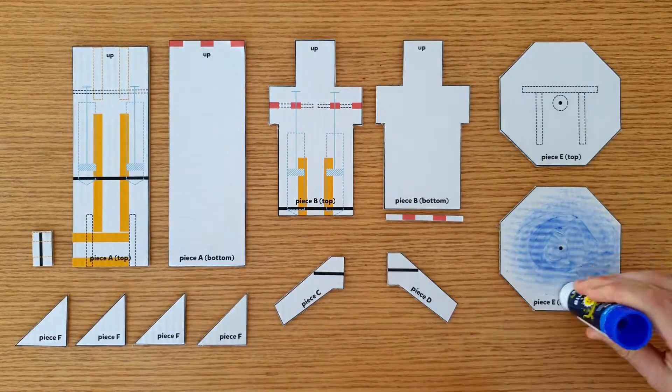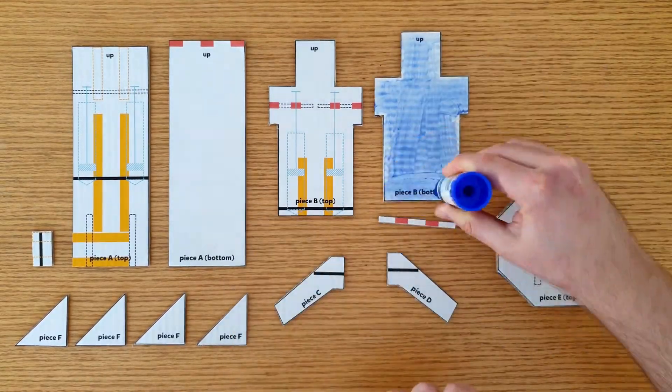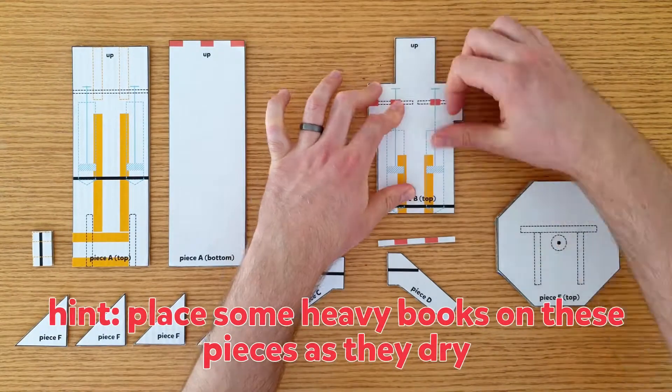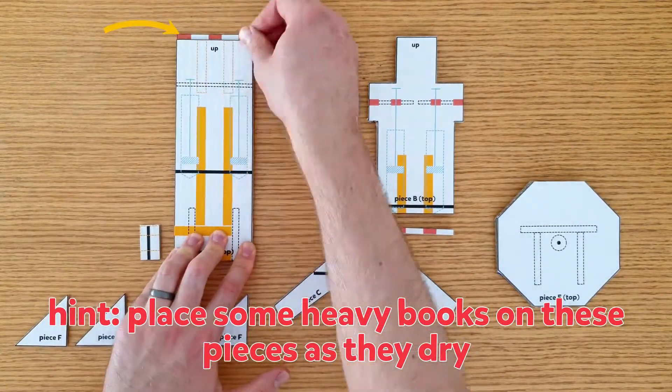Next, glue the top pieces on top of the bottom pieces. I've added the word up to let you know which way they should go. Be careful with piece A. You need to line up the bottom edges so that you can still see these red rectangles.